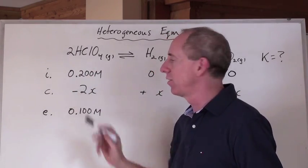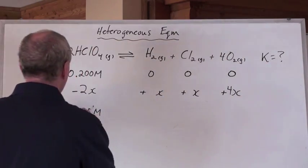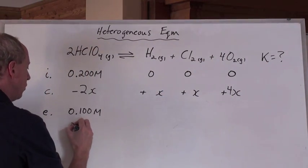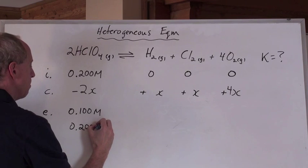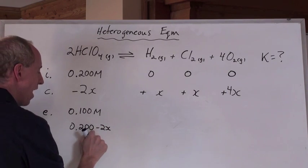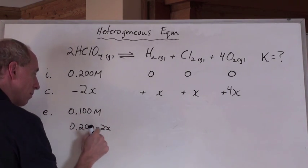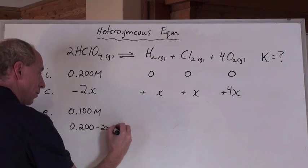So you're going to add this to this. So what you get is, at equilibrium, 0.200 minus 2x. That is what this is at equilibrium. And guess what? We know what this is at equilibrium.